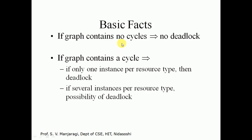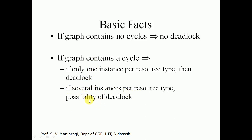Some basic facts about the resource allocation graph: if the graph contains no cycle, there is no deadlock. If the graph contains a cycle and every resource type has only one instance, then there is definitely a deadlock. If the graph contains a cycle but there are several instances per resource type, there is a possibility of deadlock but it is not guaranteed.